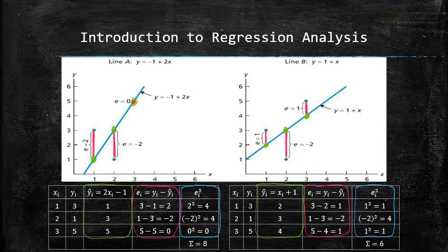And finally for each line, we compute the sum of squared errors. Based on the least square criterion, we know that line b is a better fit than line a. But is it the best one?